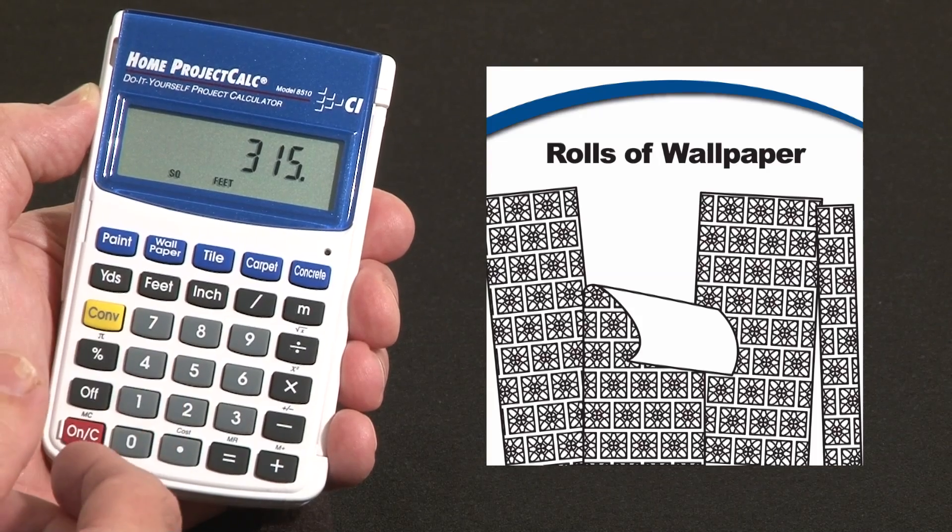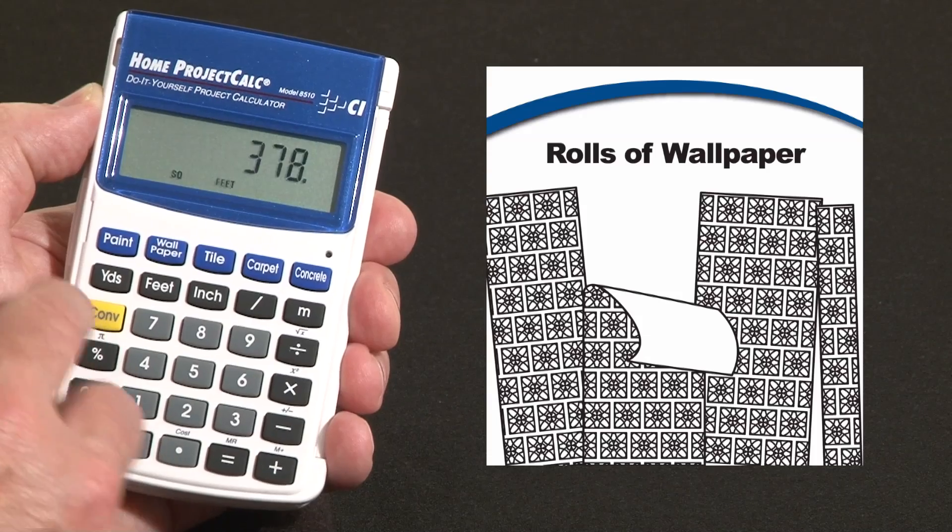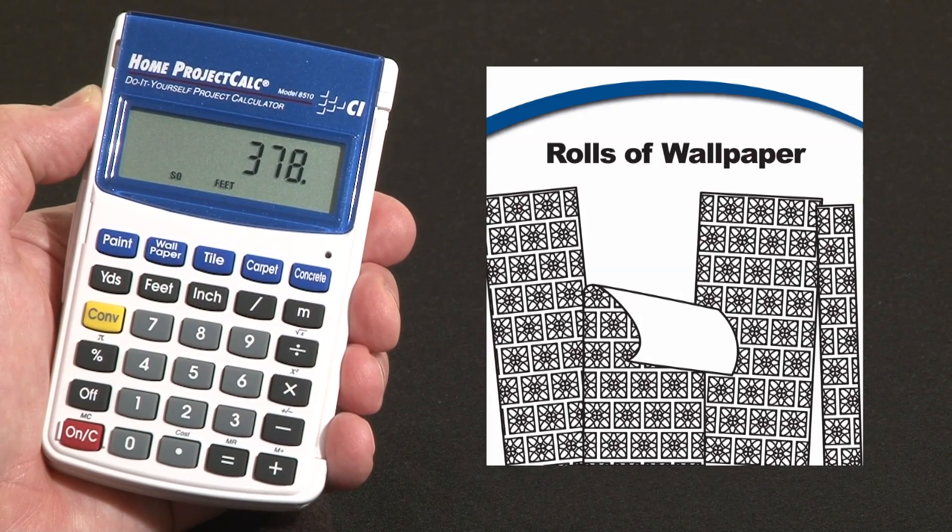Now you might want to add a percentage for waste, particularly if you're going to try to match patterns. So let's say plus 20% gives you about 378 square feet that we want to cover.